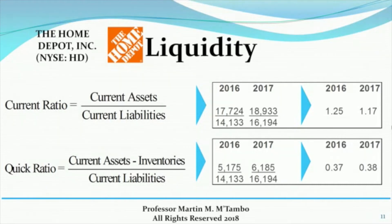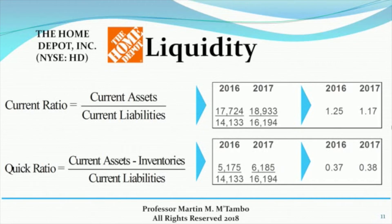Next is the summary of what we just looked at: the current ratio for 2016 and 2017, what drove the 2017 number to be slightly lower, and the quick ratio after subtracting inventory and what led to it improving slightly for 2017. Overall, these numbers look good. For the current ratio, as long as you have numbers above 1, you have more current assets than current liabilities. For the quick ratio, we compare those to the industry ratio. Next, we'll compare Home Depot's liquidity ratios to its competitor Lowe's.